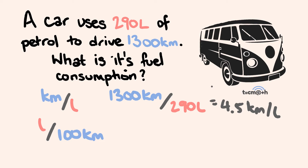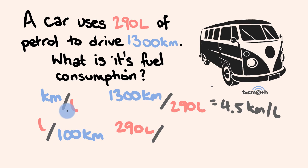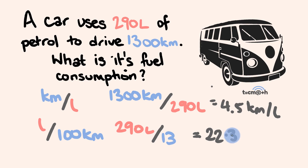The next one is litres per 100 kilometres. We have 290 litres, and this is going to be divided by the number of 100 kilometres. Since this is per 100 kilometres, in 1,300 kilometres, how many 100 kilometres do we have? So 1,300 divided by 100 gives us 13. We divide 290 by 13, and we get 22.3 litres per 100 kilometres. And that's the way you can work out fuel consumption really easily.